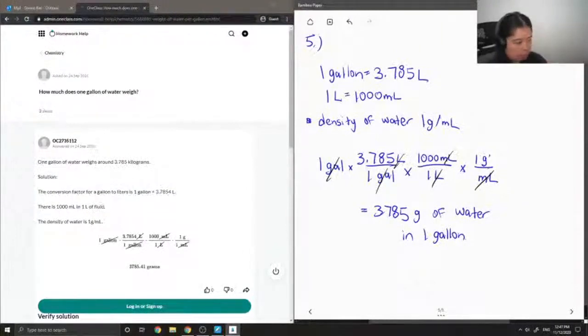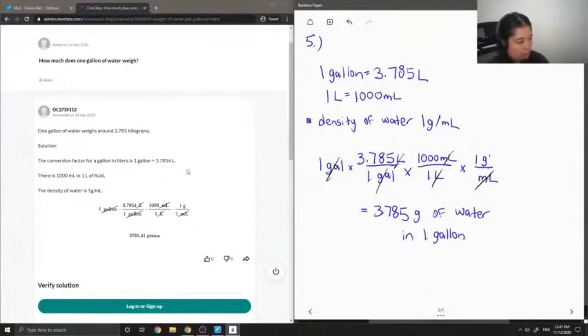Okay, so let's see what our junior tutor said. 1 gallon of water weighs around 3.785 kilograms. Yep, so they just converted grams to kilograms.